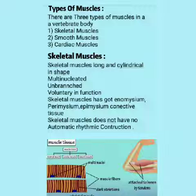Skeletal muscles, also called striated muscles, are the muscles which are attached with the bones or other muscles, and also attached by tendons to the bones. Characteristics and features: they are long and cylindrical in shape, multi-nucleated, unbranched, and voluntary in function.